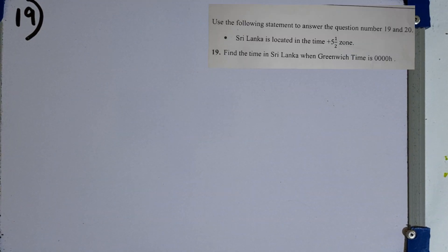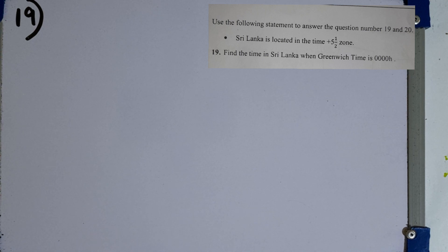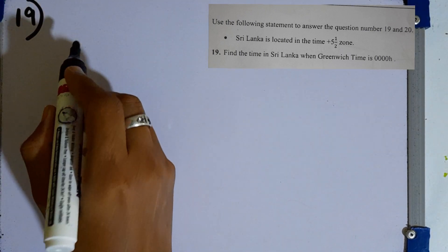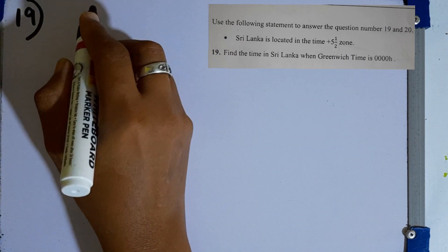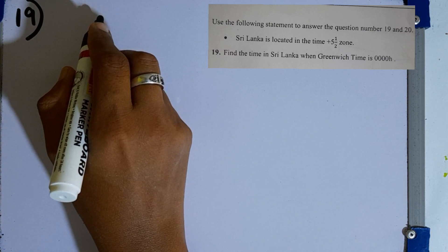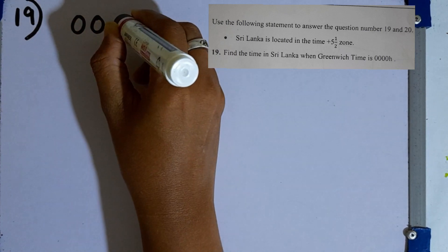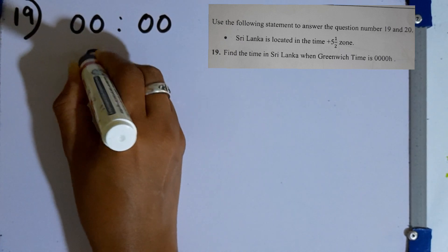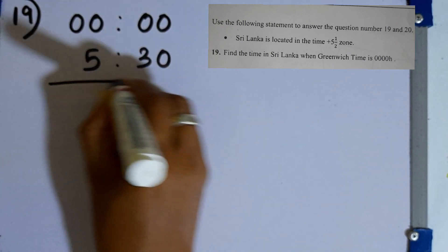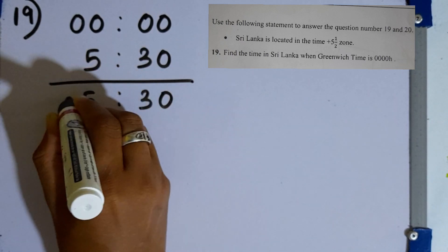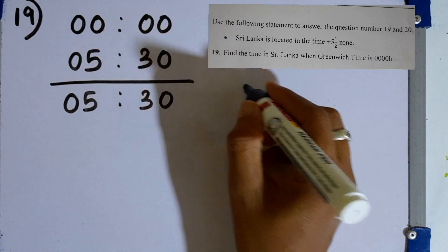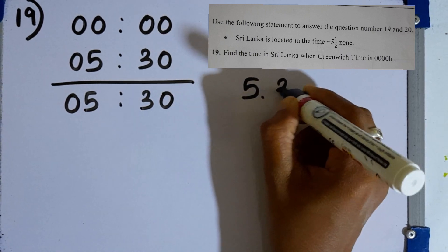Questions 19 and 20 use the following statement: Sri Lanka is located in the UTC plus 5 and a half time zone. Question number 19: Find the time in Sri Lanka when Greenwich time is 0 hours. We add 5 hours 30 minutes to the Greenwich time, so the time in Sri Lanka is 5:30 a.m.